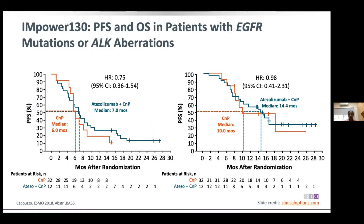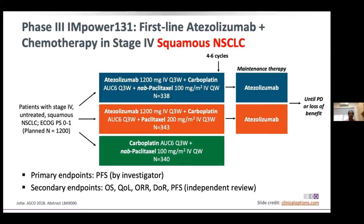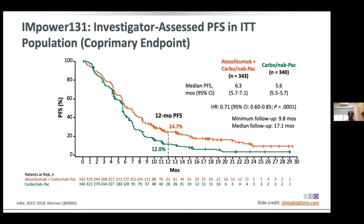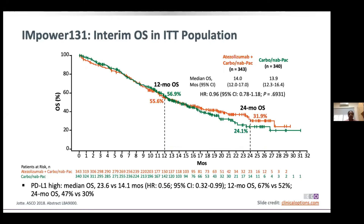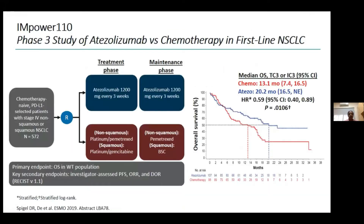IMpower-131 is a study of atezolizumab in squamous cell carcinomas. The primary endpoint was progression-free survival, which was met. For overall survival, at 12 months the difference is not large, but at 24 months there is a difference of almost 9%. This again shows that even in squamous cell carcinomas atezolizumab has good activity, though not as strong as in non-squamous — consistent with what we saw with pembrolizumab.